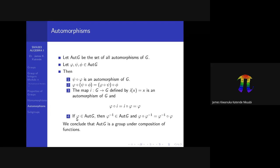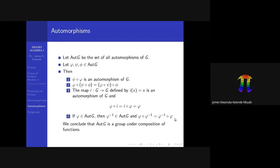Any automorphism, since it is a bijective map, must be invertible. The inverse of an isomorphism is also an isomorphism, and since the map is from G to itself, that inverse will also be an automorphism. Composing any map with its inverse gives you the identity map i. This gives us the conclusion that the set of all automorphisms of a group is itself a group under composition of functions, because all four required properties are satisfied.